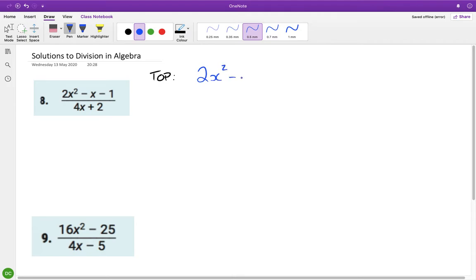So the top is 2x squared minus x minus 1. There's an invisible 1 there, so I'm just going to put it in. It's got 1, 2, 3 terms, which means it's a trinomial. So the guide is 2 multiplied by minus 1, so the guide is minus 2.